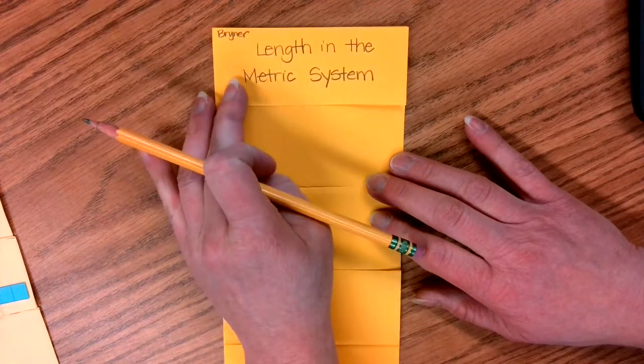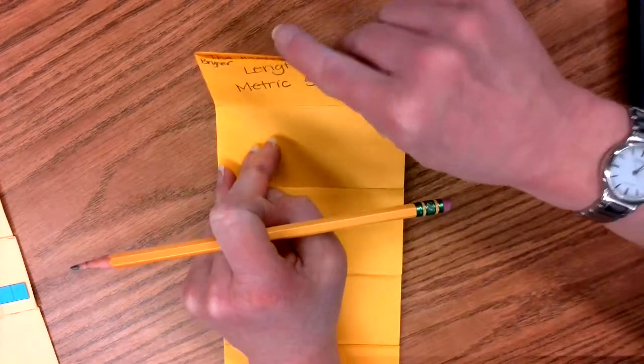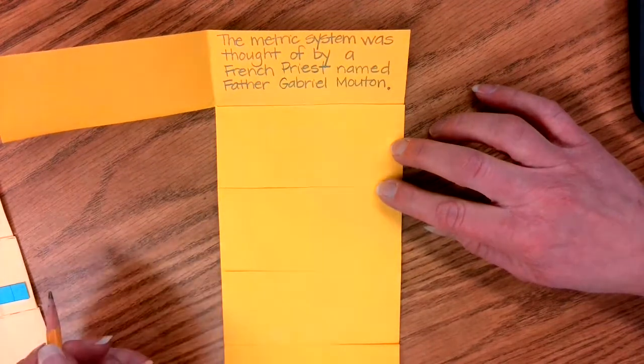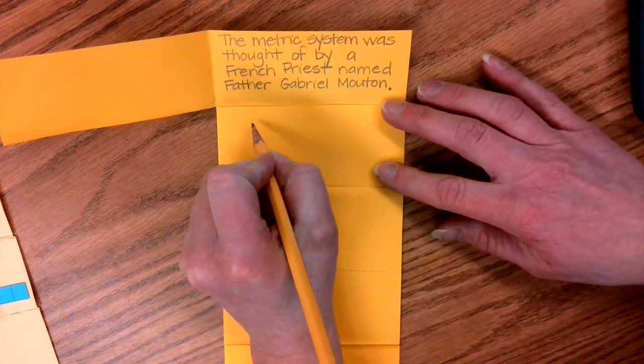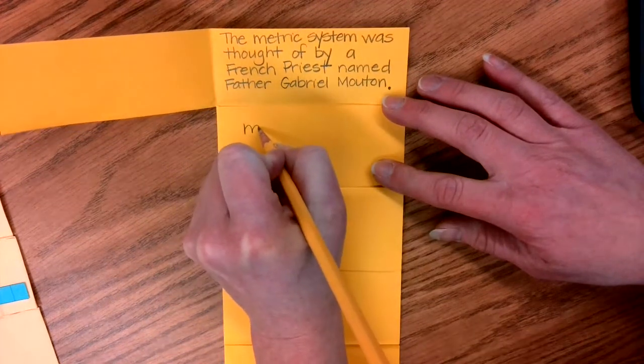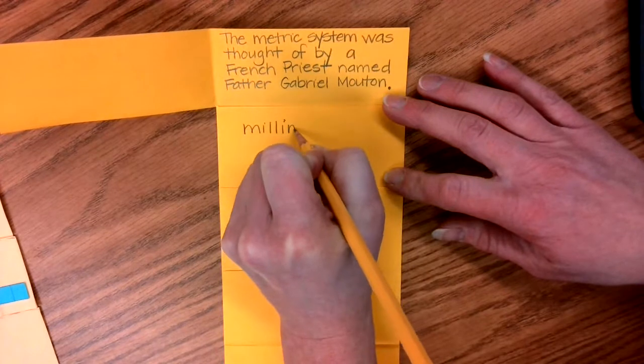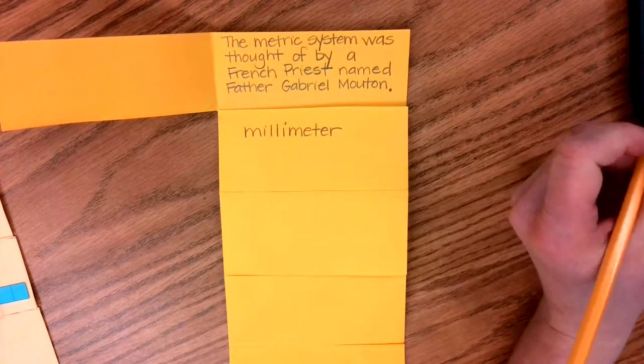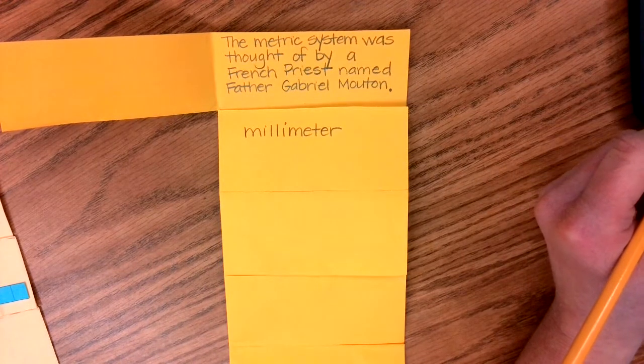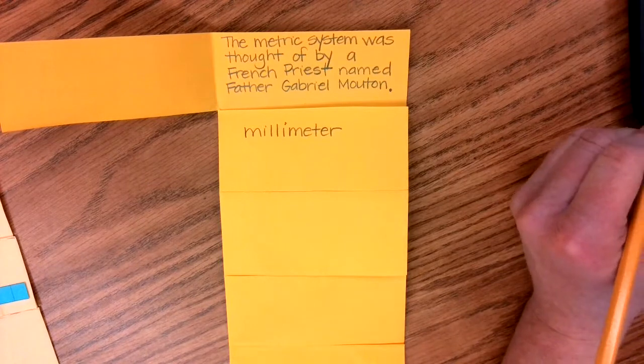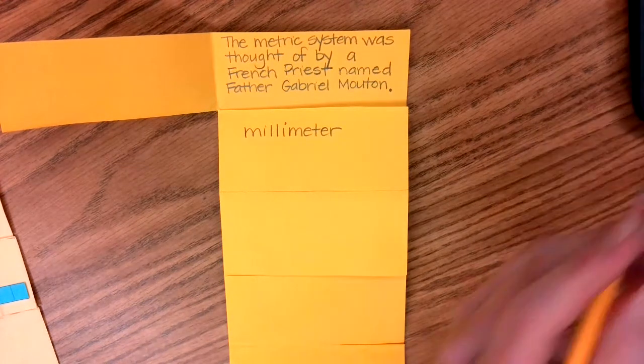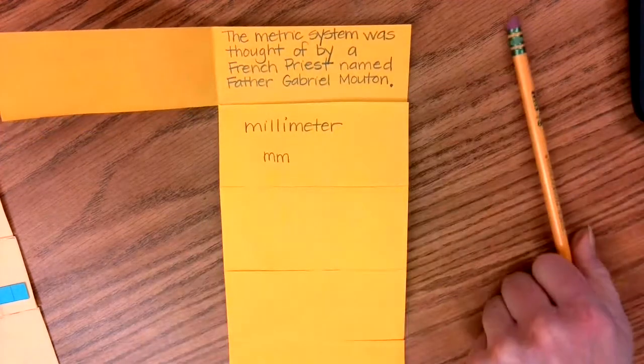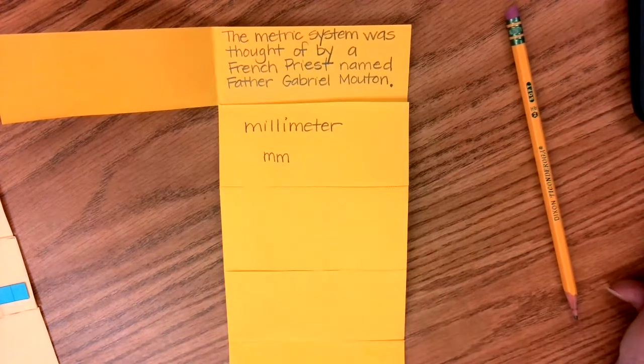All right, let's move on to our second flap right here. And on your second flap right here you're going to write 'millimeter,' just like that. Millimeter, M-I-L-L-I-M-E-T-E-R. The abbreviation for millimeter is just mm, like that, for millimeter.